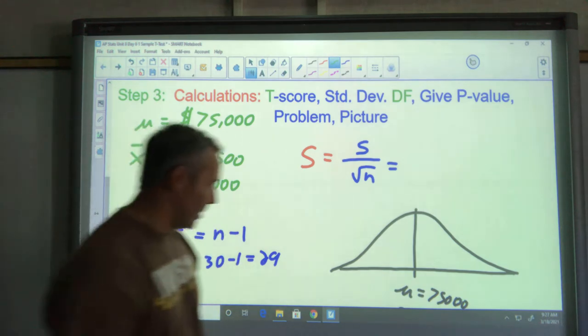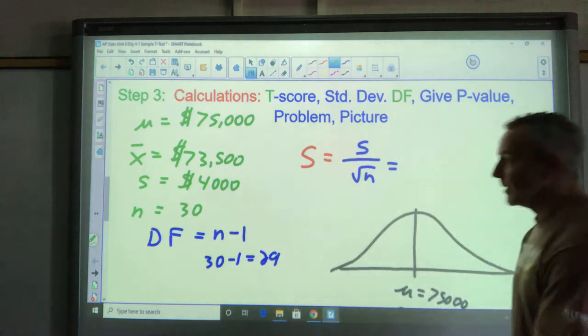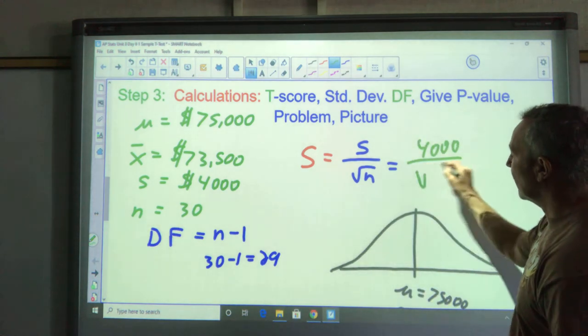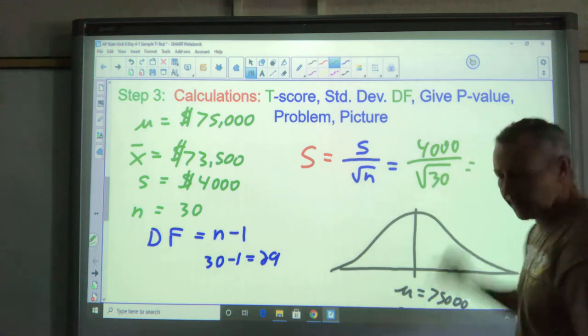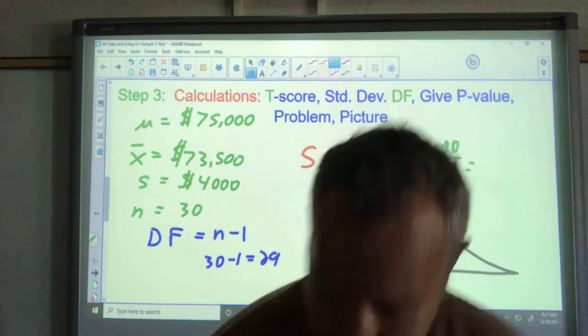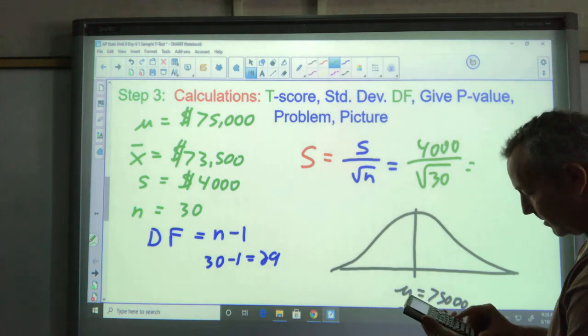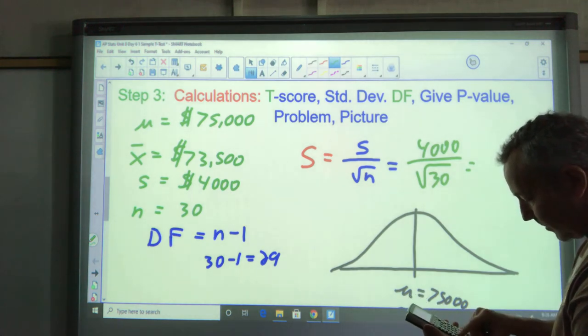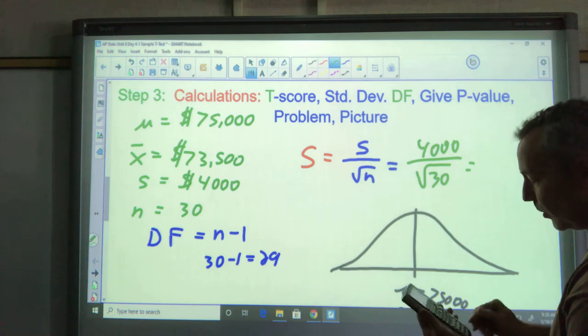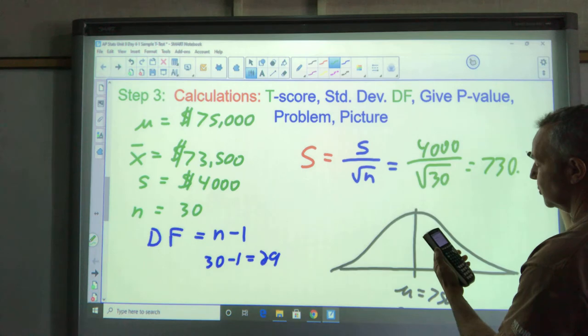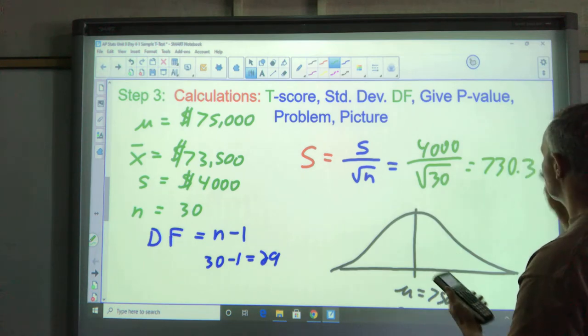Let's get our standard deviation here. It's going to be the sample standard deviation 4,000 divided by the square root of n which is 30. 4,000 divided by square root of 30 gets me 730.296. I'm going to call it 730.3.